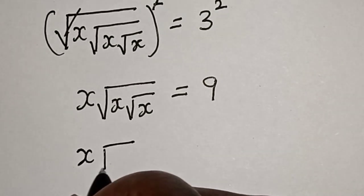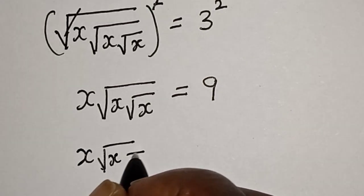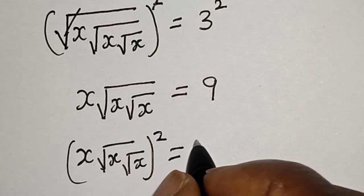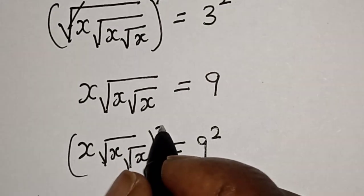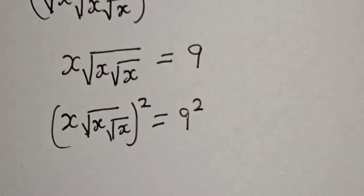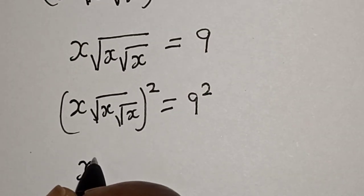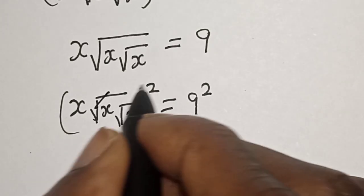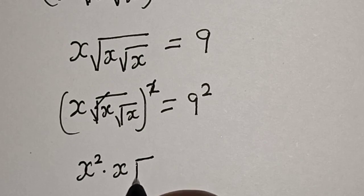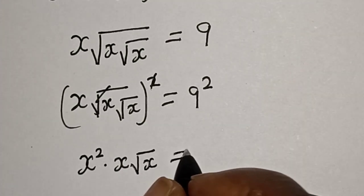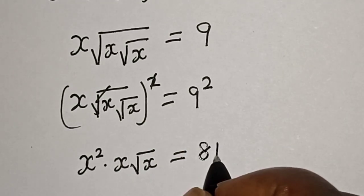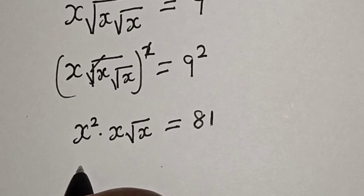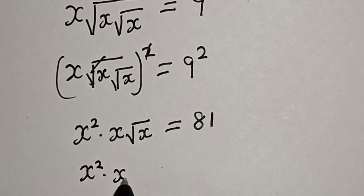Also, let's take the square of both sides again. That is, s times root of s times root of s, squared, is equal to 9 squared. Then this gives us s squared times root of s is equal to 9 squared, which is 81.